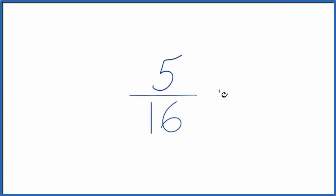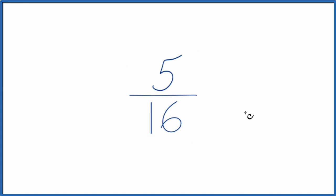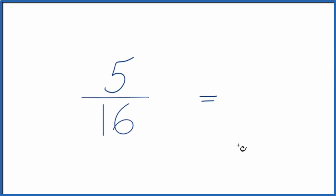Let's write three equivalent fractions for 5 sixteenths. Here's how we do that. We're looking for another fraction that's equivalent — it's equal to 5 divided by 16, just with a different numerator and denominator.